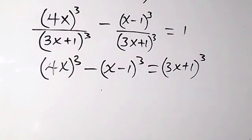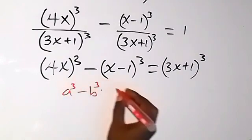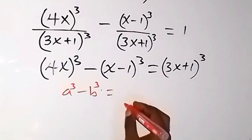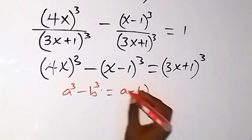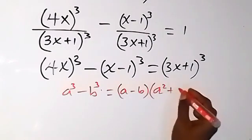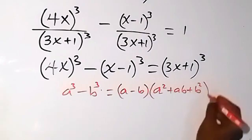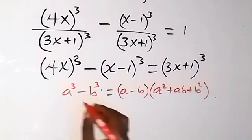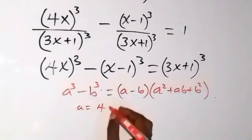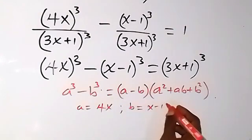On this side we have something of the form a³ minus b³, which can be written as (a minus b) multiplied by (a squared plus ab plus b squared). We make use of this identity, where a stands for 4x and b stands for x minus 1.